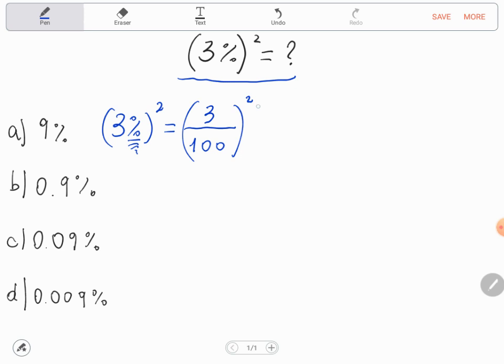And what does squared mean? Squared means when we multiply one number, one specific number, two times. In this case 3 squared is 3 times 3, divided by 100 squared is 100 times 100.